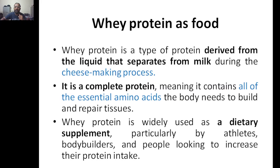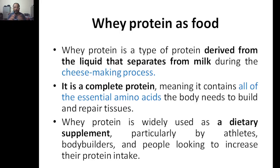Whey protein is one example we are discussing. Whey protein is derived from milk — specifically the liquid that separates from milk during cheese-making. This byproduct liquid is called whey protein. It is a complete protein because it contains all of the essential amino acids the body needs to build and repair tissues. There are around 21 amino acids and all are present in whey protein.